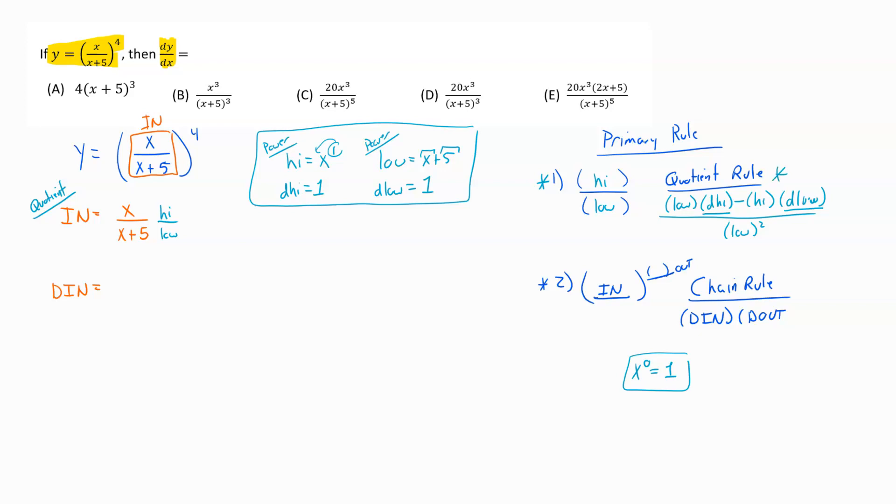Following my quotient rule to get my d in, the rule says first grab the low piece. So I grab the low piece, x plus 5. Then multiply it by the d high, so multiply it by 1. Then I subtract, multiply it by the high piece, which is x. And then I have my d low, which is 1. And all of that is over the low squared. So all over x plus 5 squared. That's my d in.